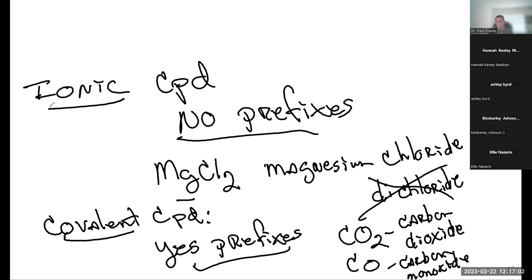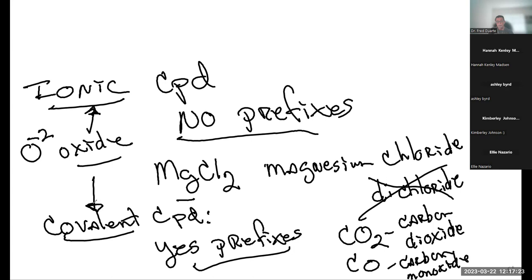For covalent and ionic compounds, the anion name stays the same — 'oxide' is used whether it's in an ionic compound like magnesium oxide or a covalent compound like carbon dioxide. The main errors I've been seeing are: using prefixes for ionic compounds, and incorrectly applying or omitting Roman numerals.